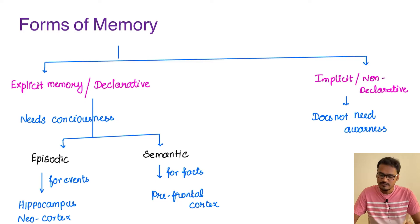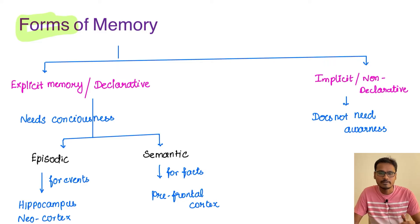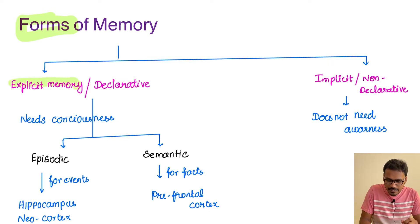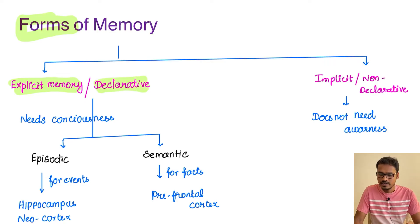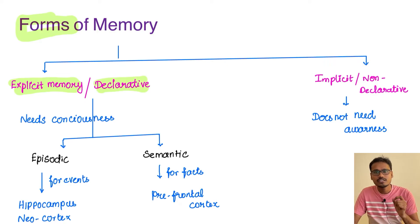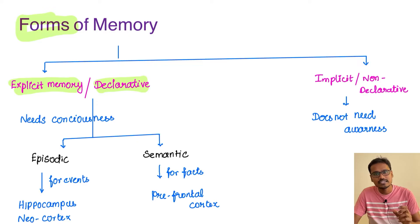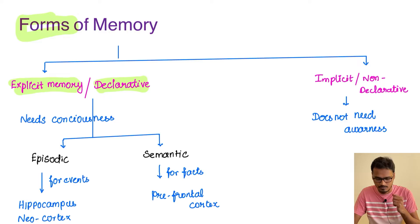Now coming to the other classification based on forms of memory. There are two different forms: one is called explicit memory and another is called implicit memory. Explicit memory is also called declarative memory. For this memory process to happen, you have to consciously think and retrieve the information — it takes a few seconds or minutes to retrieve. You have to be consciously aware of the question and respond. It is further classified into episodic and semantic.